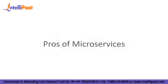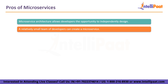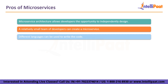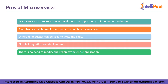Here are some pros of microservices. Microservice architecture allows developers the opportunity to independently design and deploy services. A relatively small team of developers can create a microservice. Different languages can be used to write the code for various services. Simple integration and deployment: using open source continuous integration tools such as Jenkins, Hudson, etc. There is no need to modify and redeploy the entire application when a change is only necessary in a specific area; just the corresponding services can be changed.